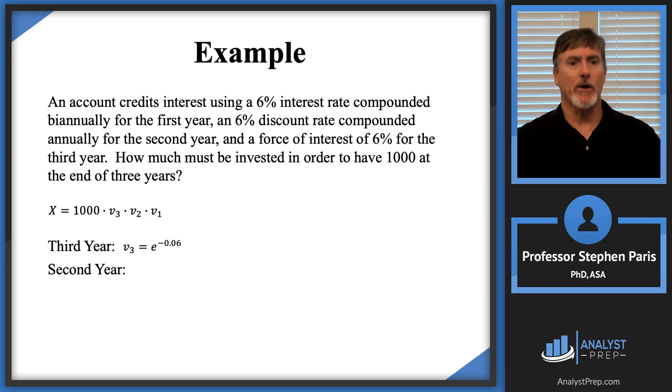Now let's look at the second year. In the second year, I read the problem and it says during the second year, I have a 6% discount rate compounded annually. That's a D upper 1. D upper 1 is 0.06. With a D upper 1, you just divide by 1. In other words, you don't really need to do anything. And you have the annual effective discount rate.